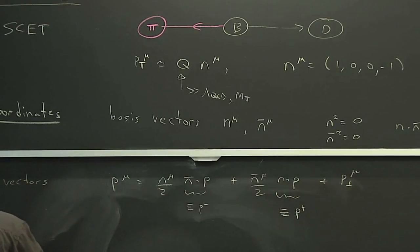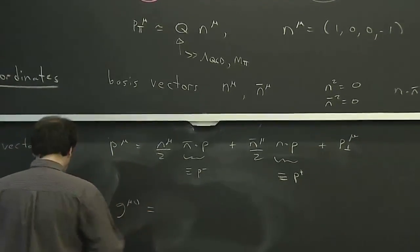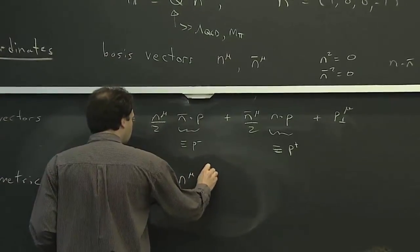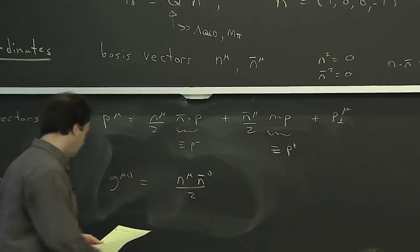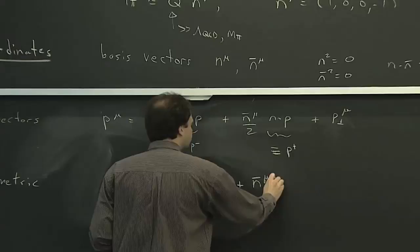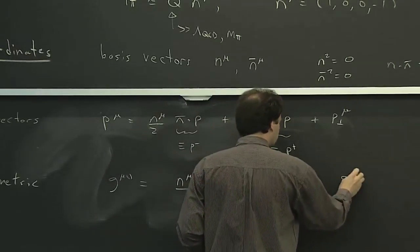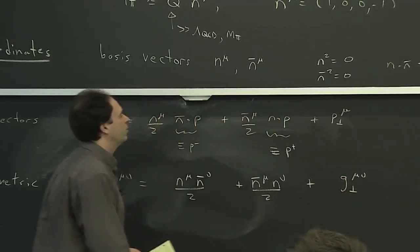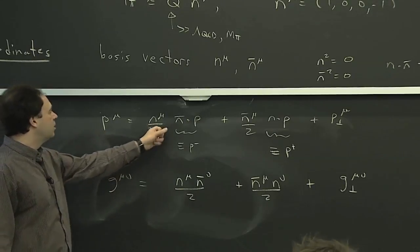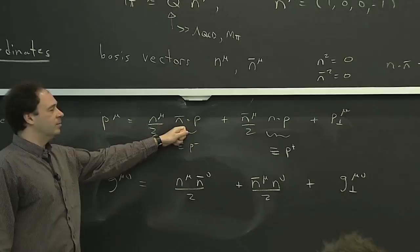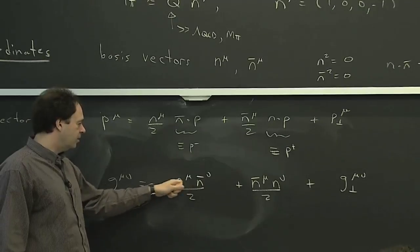We can also write the metric out in these coordinates. This makes explicit the off-diagonal nature of the basis — you have n-mu with n-bar-mu. Unlike Cartesian coordinates, where the component along a direction is given by dotting that vector into itself, here the component along n is given by dotting n-bar into the vector. That's reflected in the metric, which has these terms n with n-bar.